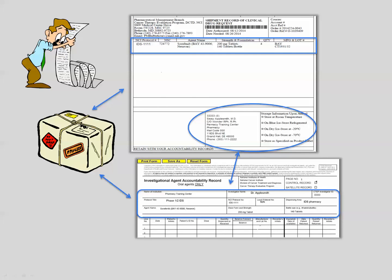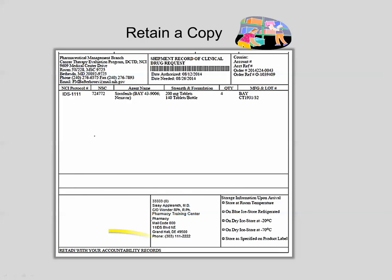Finally, ensure that you receive the correct agent. Carefully cross-verify the agent shipment contents against the shipping record and the information on the DARF. If there is a discrepancy, contact the PMB immediately at 240-276-6575. As you put away your agents, make sure you retain a copy of the shipping record with your accountability records. Store the agents according to the policy and guidelines for accountability and storage of investigational agents.